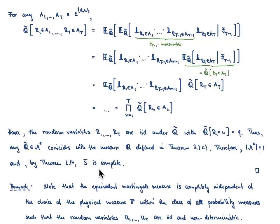That concludes the proof of the corollary. Notice that the equivalent martingale measure is in this particular situation completely independent of the choice of the physical measure P, as long as P is chosen from the class of probability measures under which U1,...,U_T are IID and non-degenerate — meaning non-deterministic.